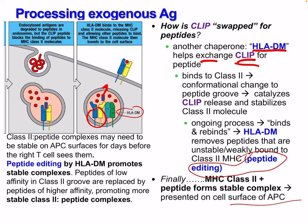Class 2 peptide complexes may need to be stable on APC surfaces for days before the right T cell sees them. Through peptide editing by HLA-DM, which promotes stable complexes, peptides of low affinity in the class 2 groove are replaced by peptides of higher affinity. This is essentially a type of affinity maturation and promotes higher, more stable class 2 and peptide complexes — stronger binding.